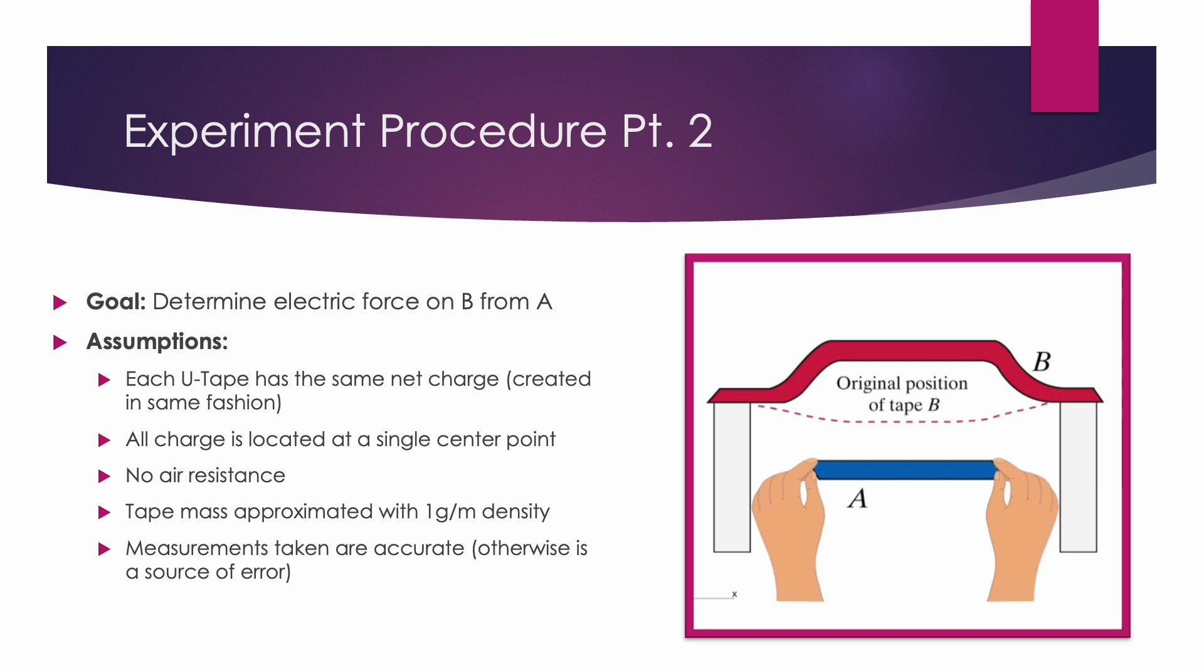In order to do that, we must assume that each U-tape has the same net charge, created in the same way. That all charge is located at a single center point of the tape to simplify the calculations. That there is negligible air resistance, that all measurements taken are accurate, and that the clear tape has a density of 1 gram per meter.